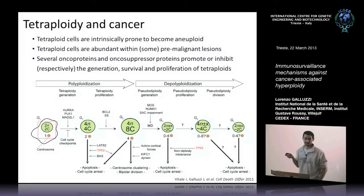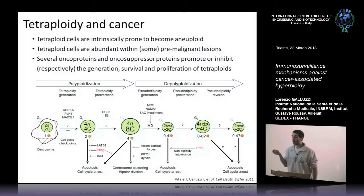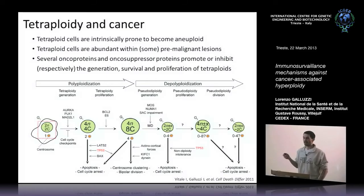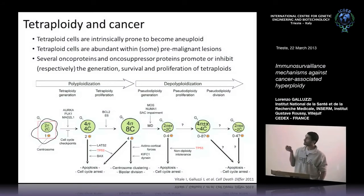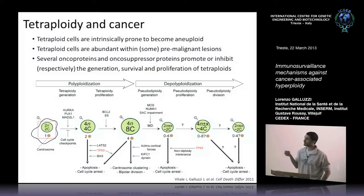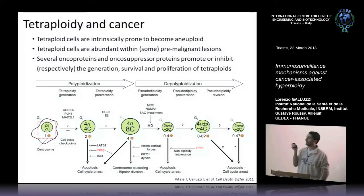Why is all this important to cancer? These cells are prone to become aneuploid, and aneuploid cells are very aggressive. Most die, but in the very few instances they survive, they can have a high survival advantage over normal cells. These cells are found within pre-neoplastic lesions such as Barrett esophagus. And they are important because they are chemo-resistant, and a lot of oncoproteins and tumor suppressor proteins are involved in this cascade, either promoting or limiting the generation of these cells.